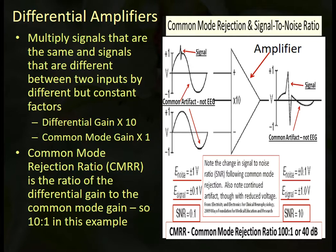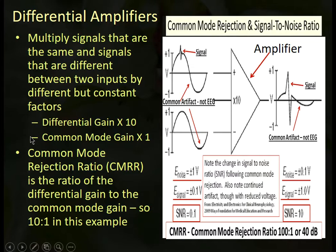The inputs are identical in terms of their electrical characteristics except that one is positive and one is negative. The differences are in what is being recorded at each location. We take two inputs, compare them both to the common ground or reference, and we compare the two to each other. Signals between those two inputs that are the same are multiplied by a small number — usually 1 — while signals that are different are multiplied by a larger number, sometimes 10, 100, or 1000.